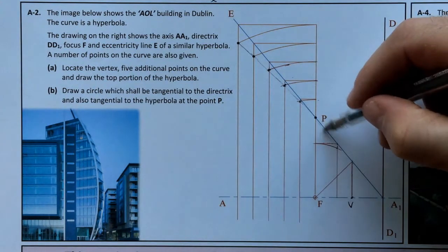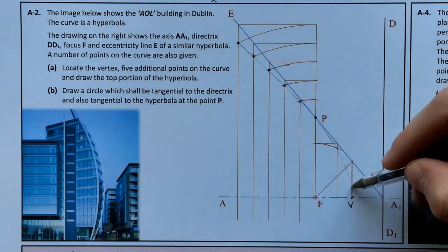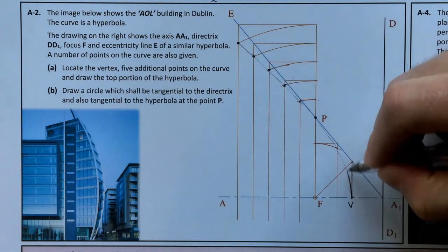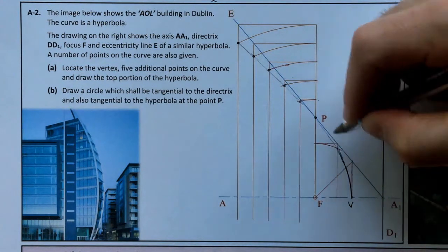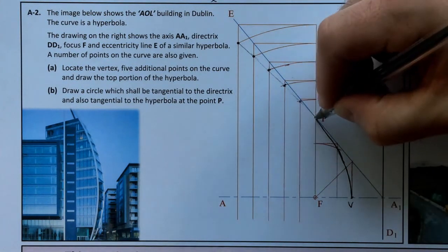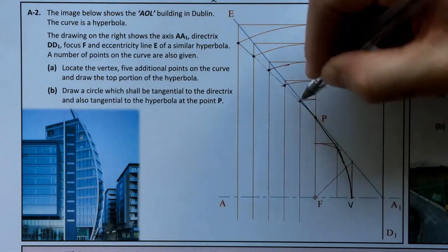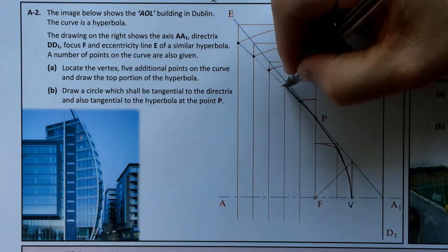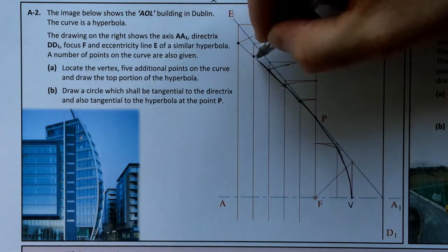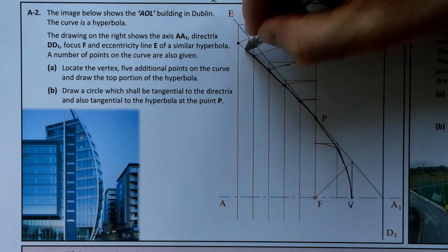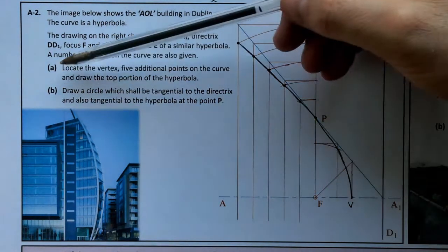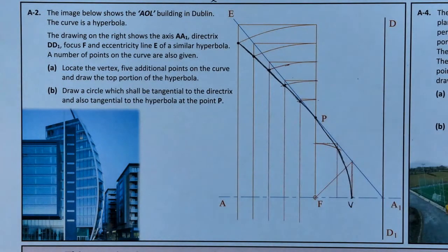Just putting that in lightly first, as neatly and as accurately as possible. There you have it — there is the hyperbola. Task Part A: locate the vertex, which we did, and five additional points to draw the hyperbola.